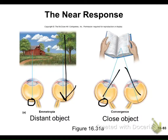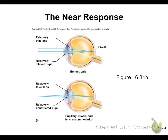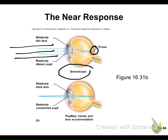Looking far away, light rays come in parallel and focus nicely right on the fovea — the sweet spot of the eye with the highest density of photoreceptors. As you look closer, the lens gets more rounded, eyes converge, and as long as you can accommodate, the light still focuses on the retina, though it shifts slightly in location.